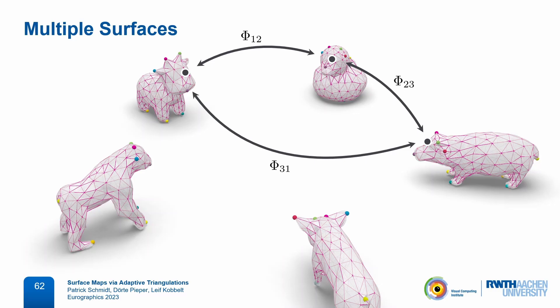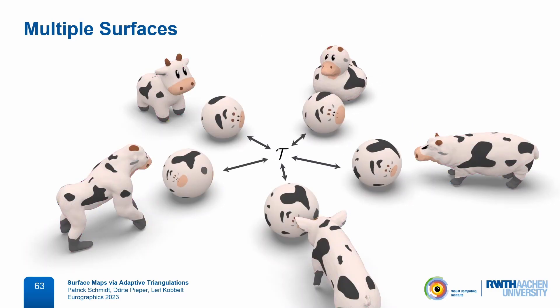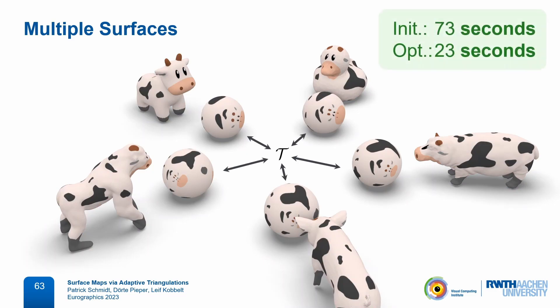Here is an example of texture transfer from the first surface to all others. It took 73 seconds to pre-compute the sphere embeddings — this step does depend on input mesh complexity — but then only 23 seconds to run our optimization.